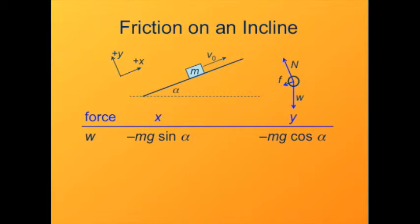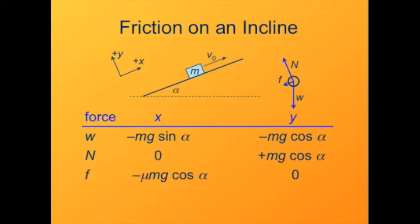The x component of the weight is minus mg sine alpha, and the y component is minus mg cosine alpha. If alpha is zero, the x component is zero and the y component is all of it, mg — just as needed. The normal force is whatever is needed to keep the y-direction acceleration zero, so it equals the negative of the y component of weight. The force of friction is mu times the normal force magnitude; since the block is sliding uphill, friction points downhill — hence negative.